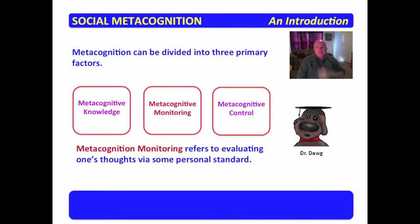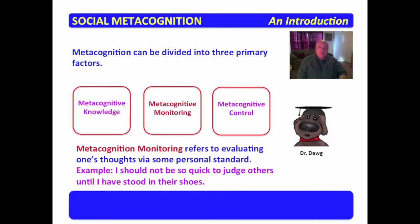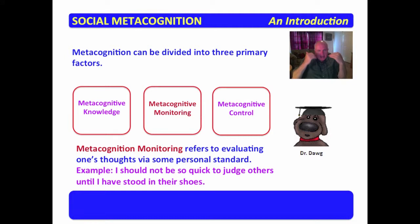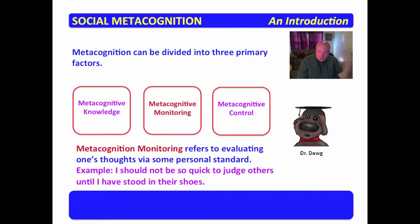Metacognitive monitoring refers to evaluating one's thoughts via some personal standard. For example: I should not be so quick to judge others until I have stood in their shoes. In other words, I'm looking at what I'm thinking and measuring it against certain standards I have adopted. My standard in this case is that I shouldn't judge people until I've stood in their shoes, so I monitor my judgmental thoughts against that standard.